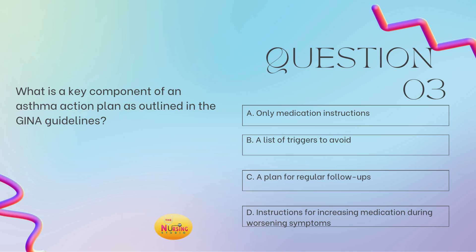What is the key component of an asthma action plan? An asthma action plan is — in the event of an exacerbation or other altering factors with asthma — having a plan on what they should do. One of those key components is instructions on increasing their medication during worsening symptoms, so D. You want to make sure they know what steps are in the action plan for their best outcome.